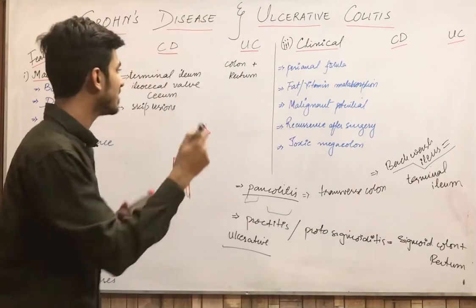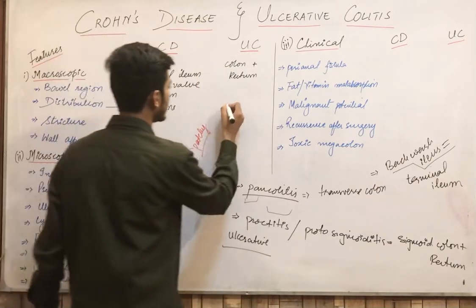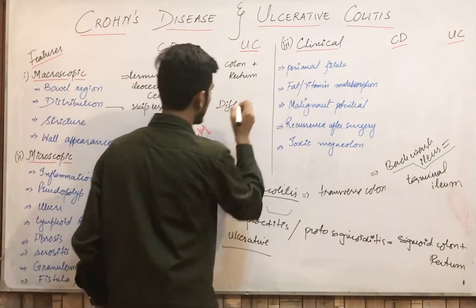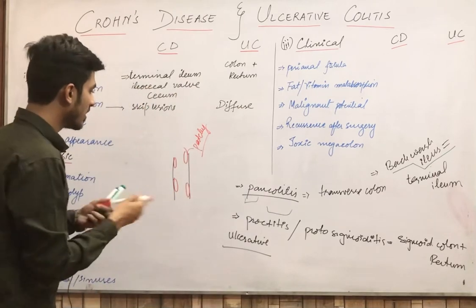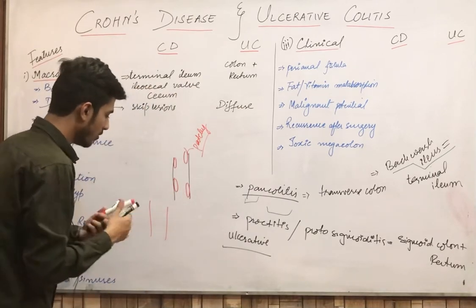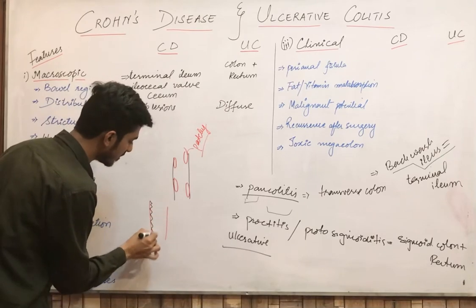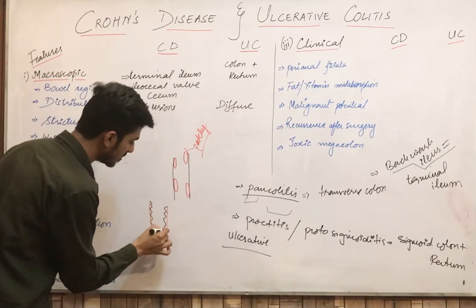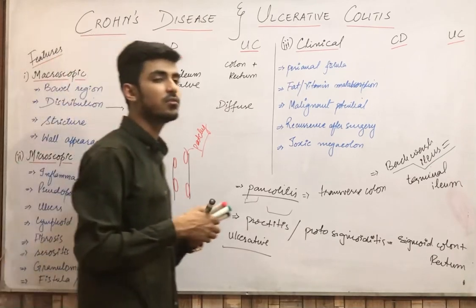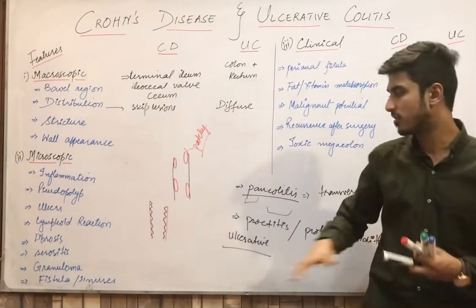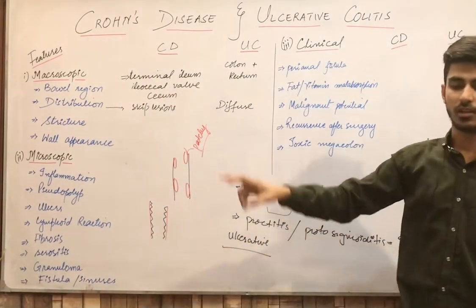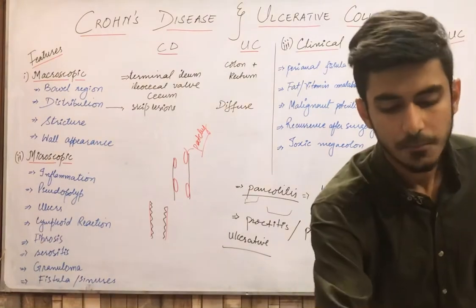In ulcerative colitis, there are diffuse lesions. Diffuse lesions means that the whole intestinal mucosa is involved — the entire mucosa is diffusely involved. This diffuse involvement of the intestine or mucosa occurs in ulcerative colitis.